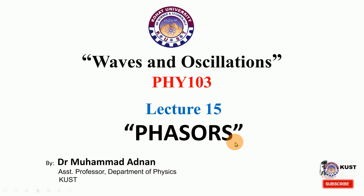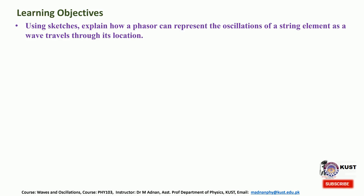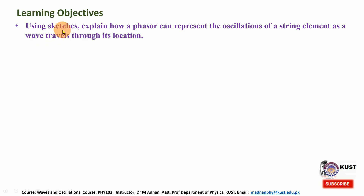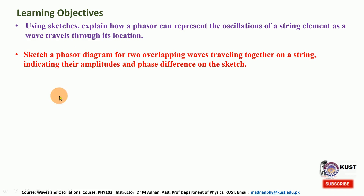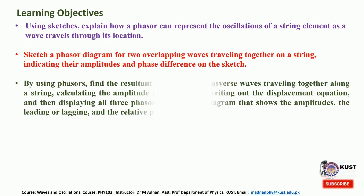First I will give the learning objectives. At the end of this lecture the student will be able to explain how a phasor can represent the oscillation of a string element as a wave travels through its location — basically these are sketches. Also they will be able to explain how a phasor diagram for two overlapping waves traveling together on a string indicates their amplitude and phase difference on the sketch.